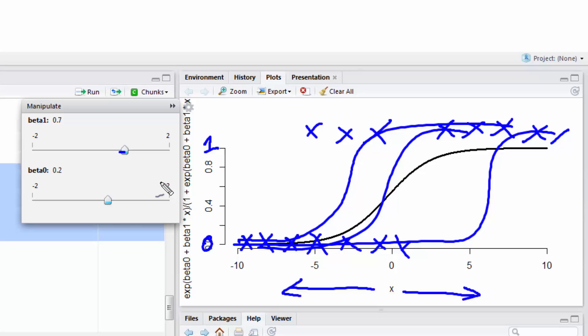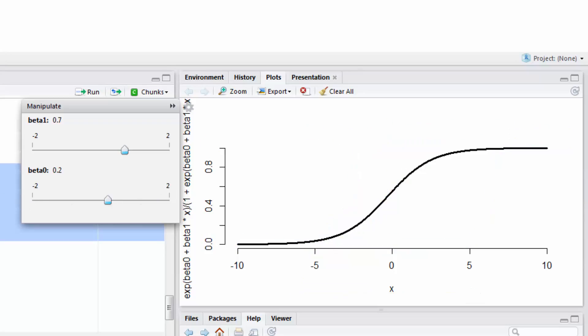But so just imagine these points staying there, and I'm going to get rid of them. And then just see how what R has under its disposal is to be able to move these two sliders and then define the S curve that fits that data the best. And so that's all that logistic regression is doing.